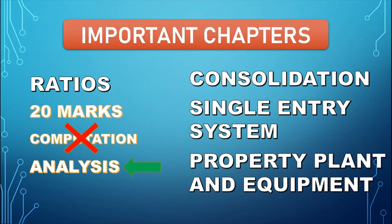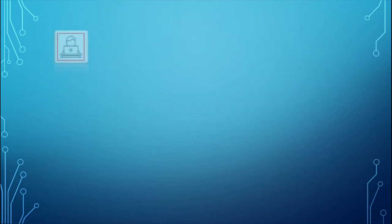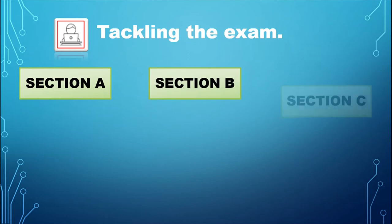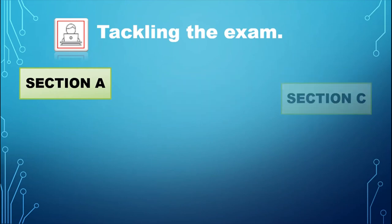Next, we will see some tips while tackling the exam. Let us see the format of the FR exam. Section A, Section B, and Section C are the three sections where the FR exam is divided. First of all, let us see what is in Section A. Section A is 30 marks of objective test questions.